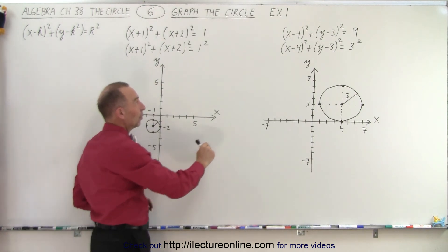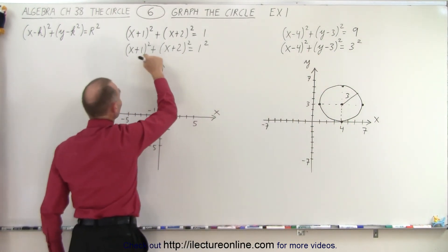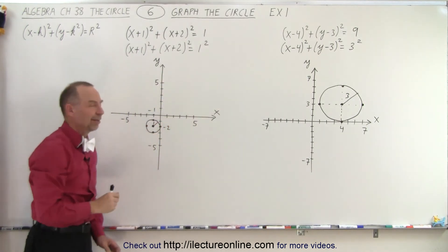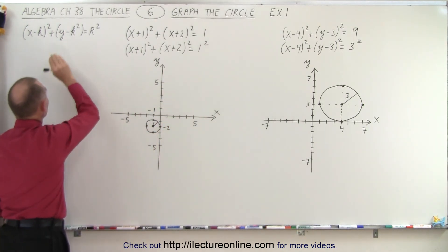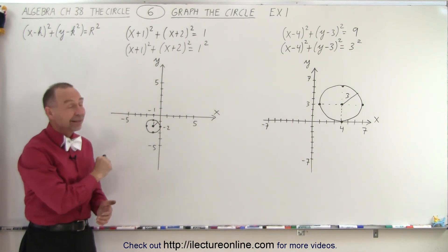Notice the difference: when we have negative signs there, h and k are positive. We have positive signs there, h and k are negative. That's sometimes a little confusing, but remember, take a look at the general equation and then it begins to make sense. And that is how it's done.